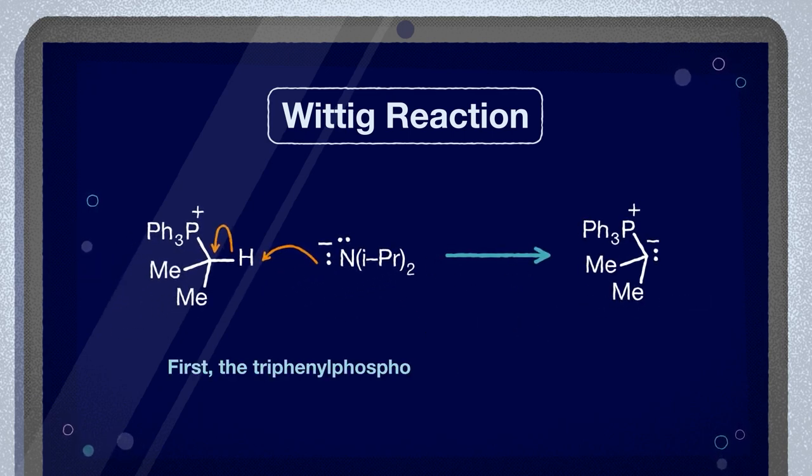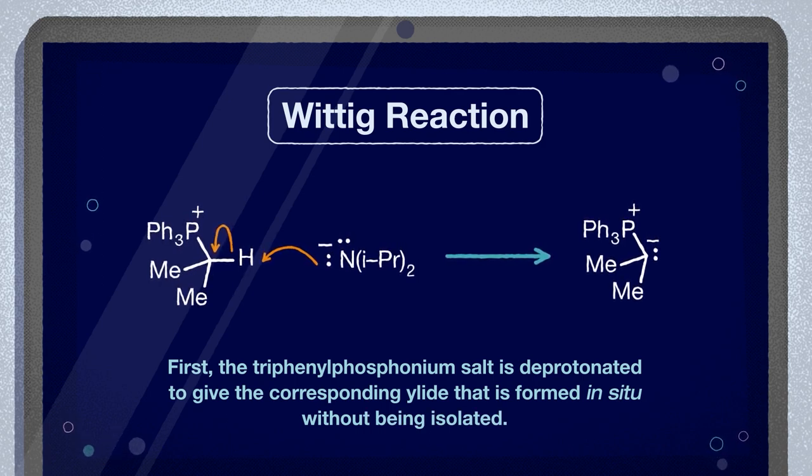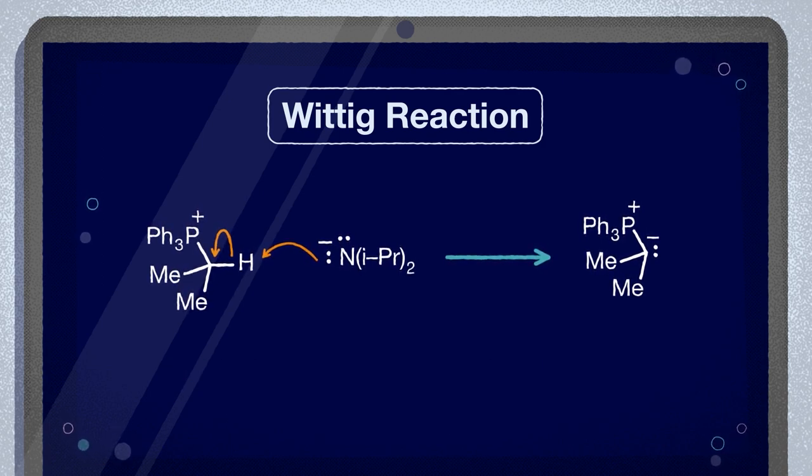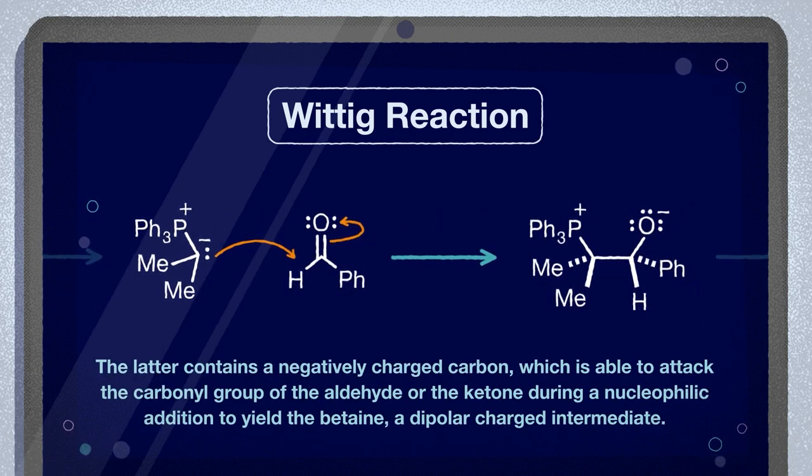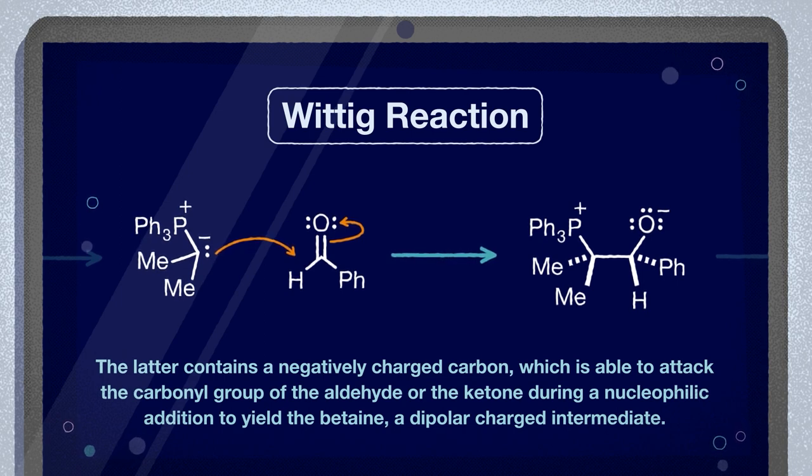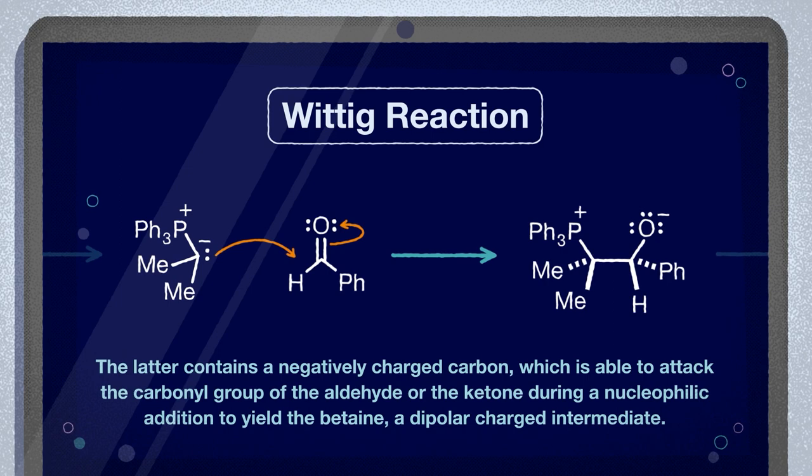First, the triphenyl phosphonium salt is deprotonated to give the corresponding ylide that is formed in situ without being isolated. The latter contains a negatively charged carbon, which is able to attack the carbonyl group of the aldehyde or the ketone during a nucleophilic addition to yield the betaine, a dipolar-charged intermediate.